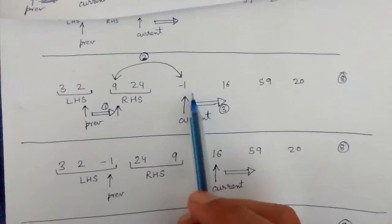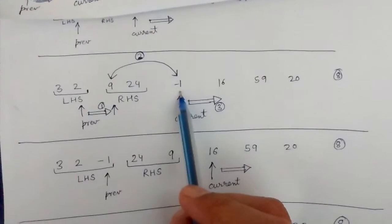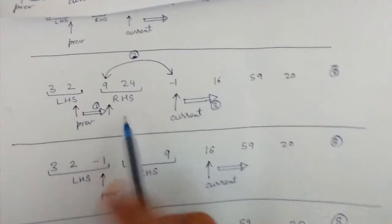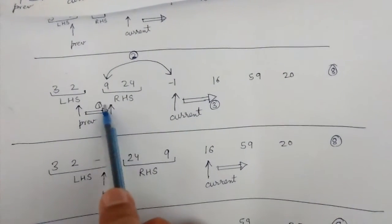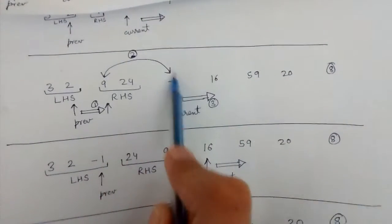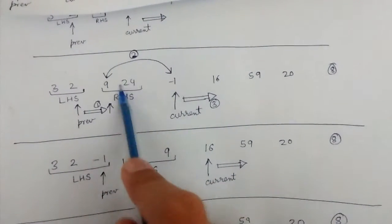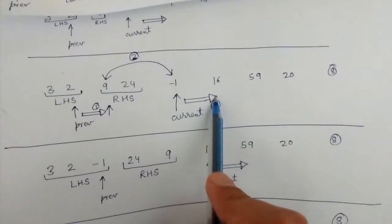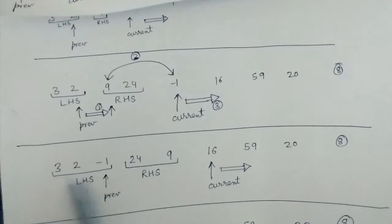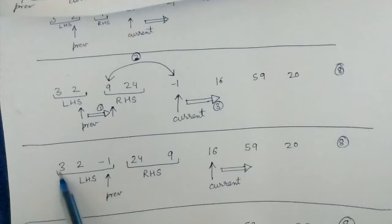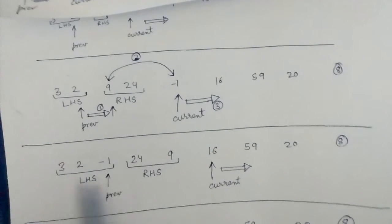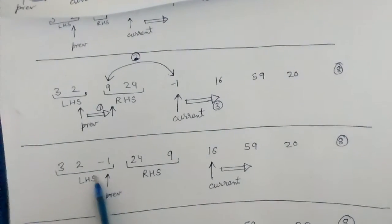Now current is at minus 1, which is less than 8, so we need to do the three steps again: prev incremented by one, then 9 and minus 1 are swapped, and then current increments. LHS expands by one, so 3, 2, and minus 1 are all the contents of our LHS.